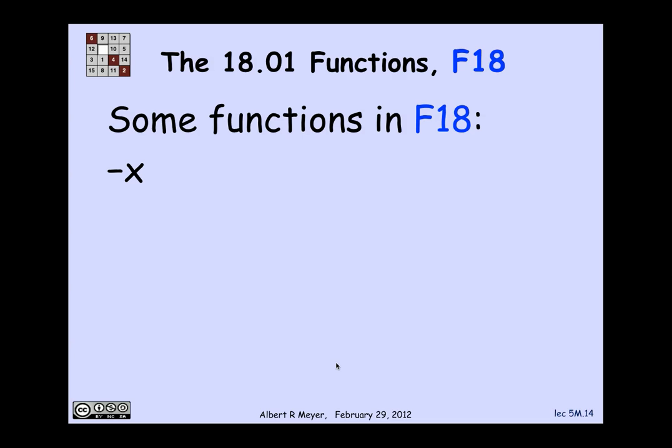Let's look at how this definition works. I claim that the function minus x is in F18. How do I build up minus x from the rules? Minus 1 is a constant function, so I have that. And x is just the identity function. I can multiply two functions that I have, so if I multiply minus 1 times x, I got minus x. So I've figured out that function is in F18.